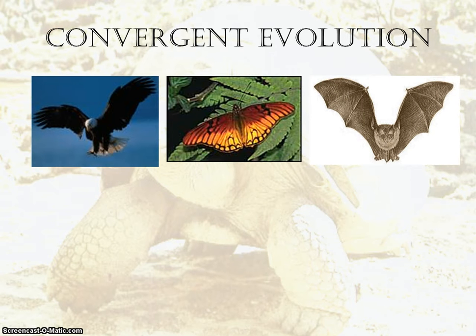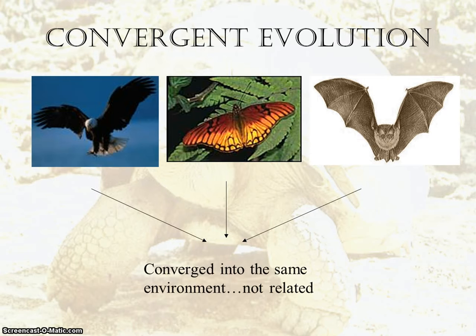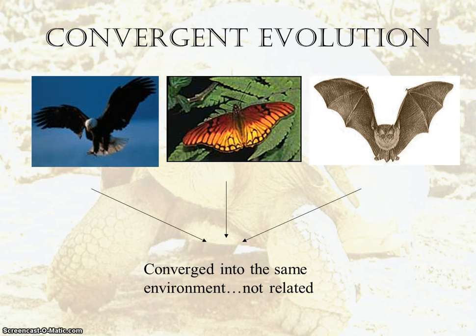Another example: avian animals, or animals that have the ability to fly. You have the bald eagle, a butterfly, and a bat. Through convergent evolution, they are in a similar type of environment, so they adapted similar traits, but they're not related whatsoever. A bird obviously lays eggs and has feathers; a butterfly is insect-based with a larval stage; and a bat is a mammal. Different species that evolved similar traits due to similar environmental factors.